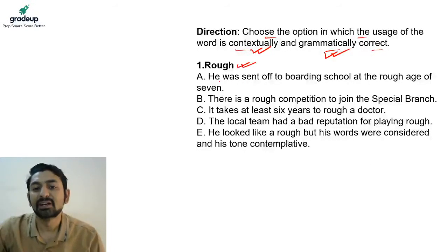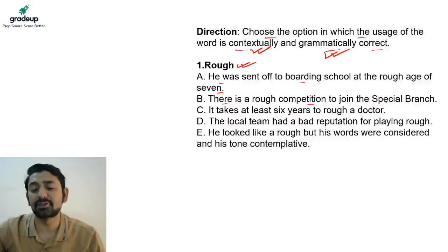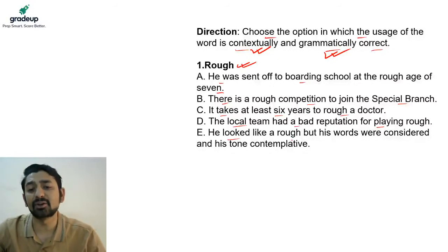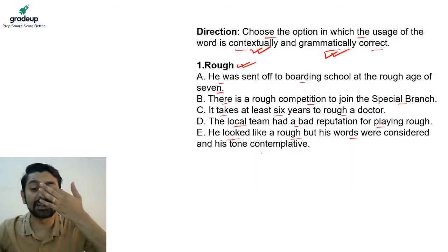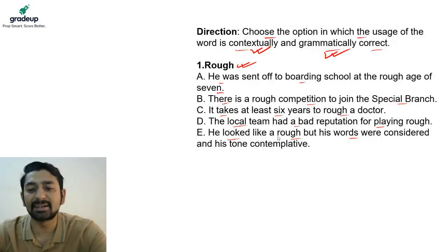The word is 'rough.' Option A: He was sent off to boarding school at the rough age of seven. Option B: There is a rough competition to join the special branch. Option C: It takes at least six years to rough a doctor. Option D: The local team had a bad reputation for playing rough. Option E: He looked like a rough, but his words were considered and his tone contemplative. Which is contextually and grammatically correct?